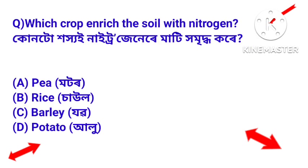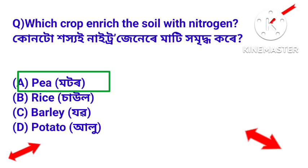Next question: which crop enriches the soil with nitrogen? Answer: Pea (motor mah). The pea crop enriches the nitrogen content of the soil.